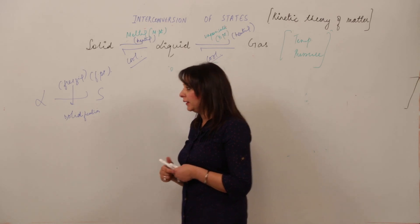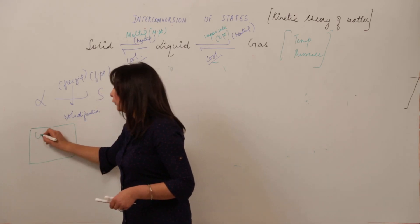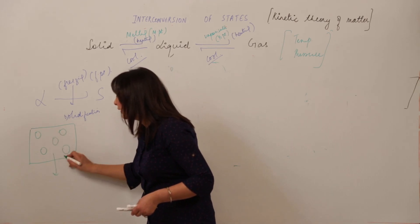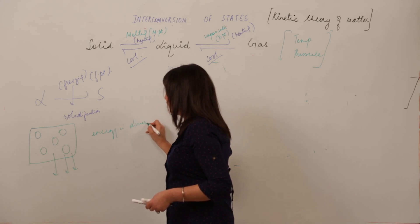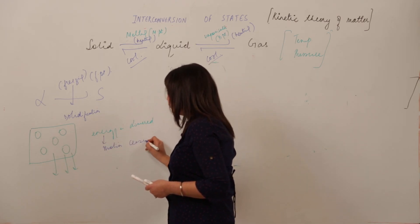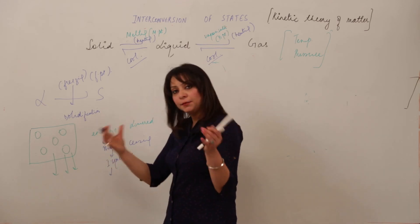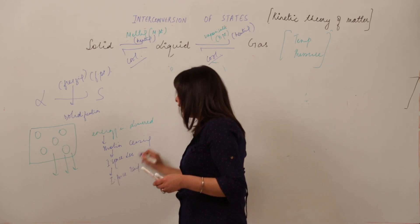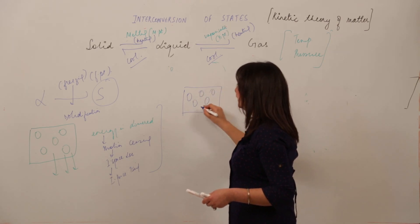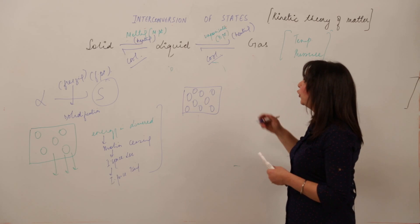On the basis of kinetic theory, the reverse happens for liquid to solid. In liquid, particles have some space and less force. When we cool it, energy is lowered, so the motion decreases, the intermolecular space decreases, particles come closer, and intermolecular force increases. When particles are closely packed with less space and more force, that corresponds to the solid state — and this is how liquid gets converted into solid.